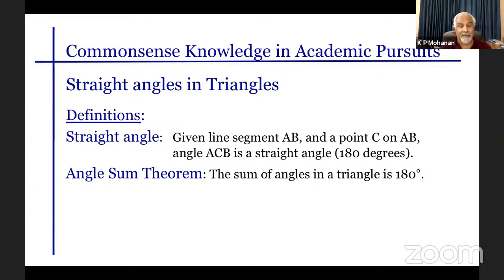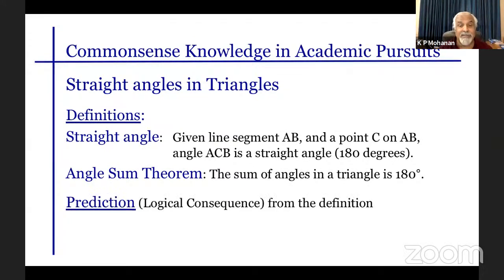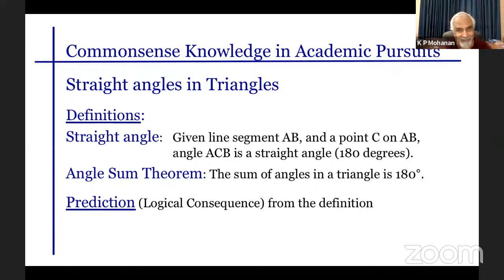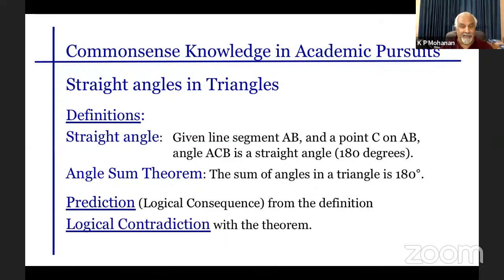This shows that the combination of the angle sum theorem and the definition of straight angle gives a logical contradiction, therefore the theory is false. I've used the two tools — looking for logical contradictions and deducing logical consequences — put them together, and found a logical contradiction: the theory is bad. I'm not saying there's no way out, but I leave the solution to you. That agony is a good thing.